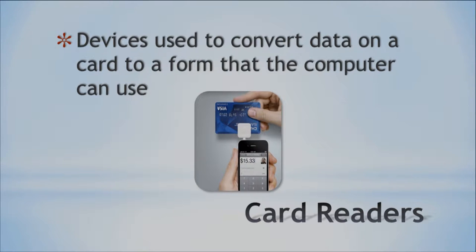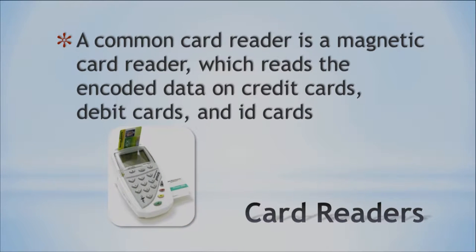A common card reader is a magnetic card reader. You've got encoded data on your credit cards, debit cards, and ID cards. Typically you take the card and swipe it. But be careful — there are devices that can capture the data on your credit card from a distance. You could be walking down the street minding your own business, and someone with one of these devices could get your credit card information. That's usually not a good thing. There are wallets these days made with RFID shielding so that people can't just read your credit card or other ID cards.